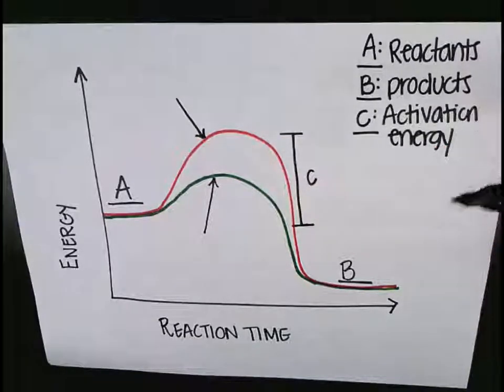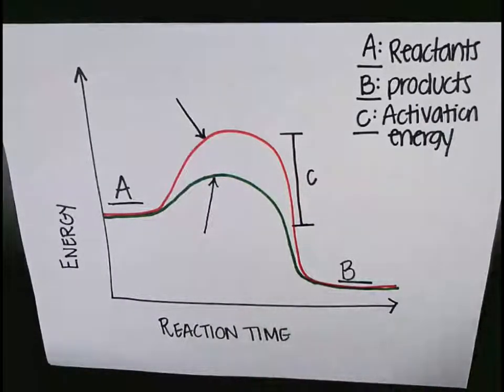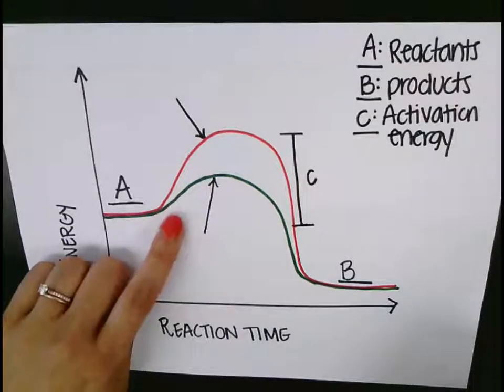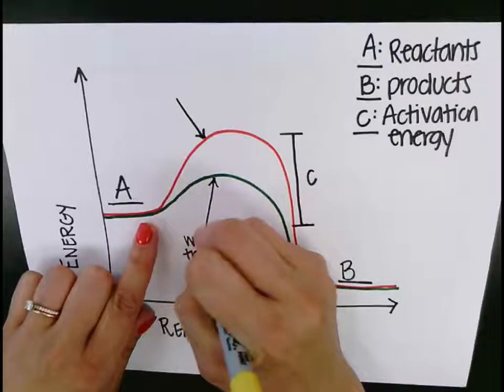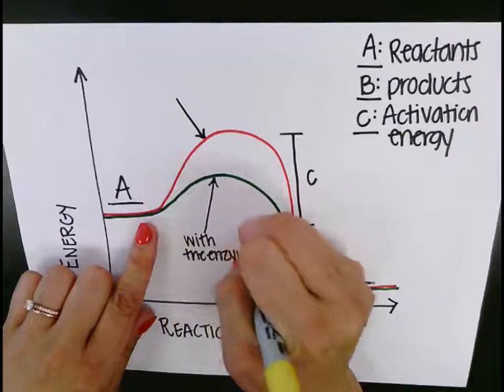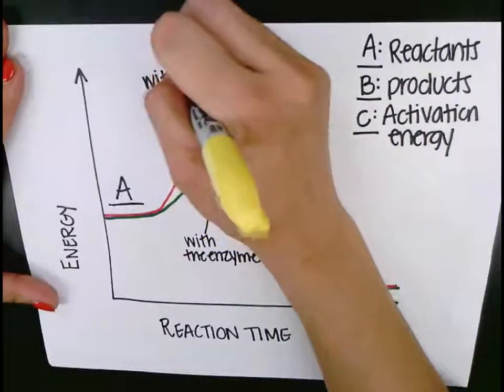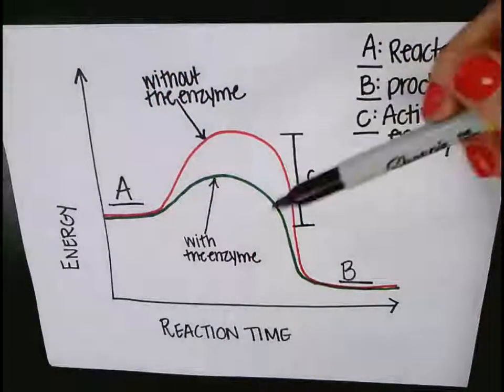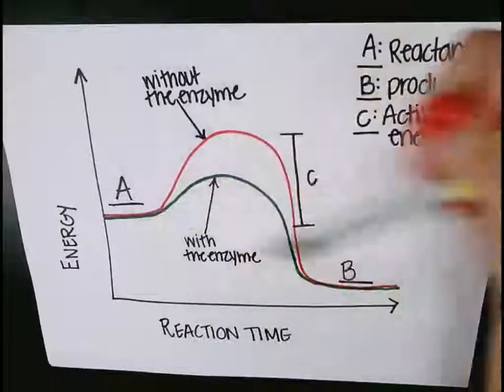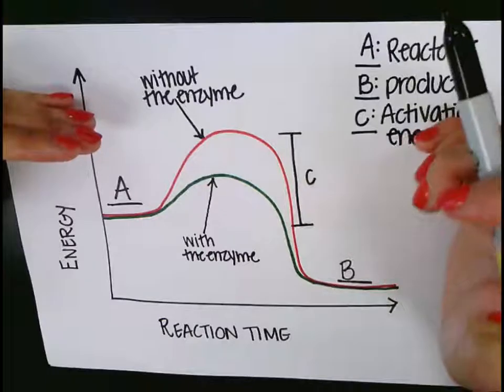So which one of these would be the enzyme? Which one would be faster? This one or this one? Which one has the shorter path? The green line or the bottom line? So the bottom line would be the reaction with the enzyme. The top line would be the reaction without the enzyme. So the way an enzyme works is it still starts at the same spot, it still ends at the same spot, but it has less or lower threshold of energy to actually get started.